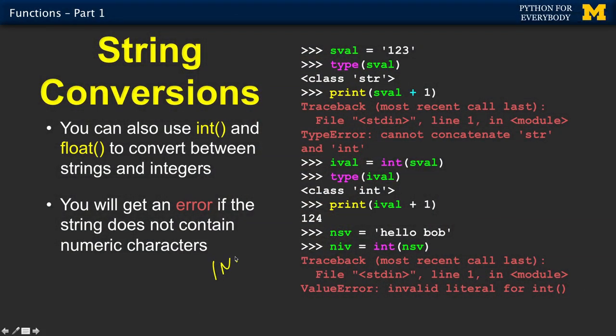String conversions as well. We have been using int and float to do things like, you know, read things in, because input is a function, but it always gives us back a string, and it gives us a string. We might want to use this as a number. So the string 1, 2, 3 is not the same as 123, that is a string, and if we do something crazy like add 1 to it, boom, we get a traceback, because we can't concatenate string and integer just because they're the wrong type.